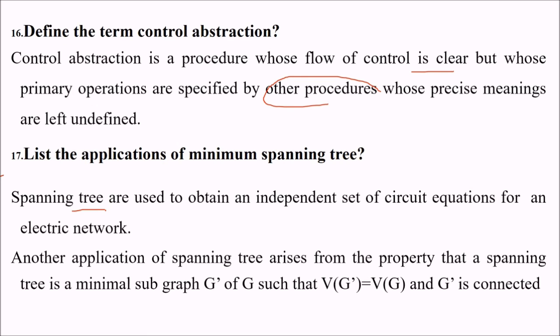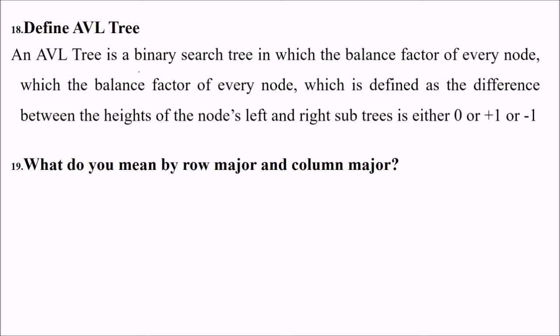List application of MST. MST is used to obtain an independent set of circuit equations for an electric network. Another application of spanning tree arises from the property that a spanning tree is minimal subgraph G such that this VG is equal to VG dash if this G dash is connected. What is AVL tree? This is a binary search tree having a balance factor for every node. This balance factor is defined as the difference between heights of the node's left and right subtrees. If it is either 0 or plus 1 or minus 1 then this is where we need some balancing. This is called binary search tree if the nodes are aligned like this. To reduce or to avoid this kind of situation we use AVL tree.